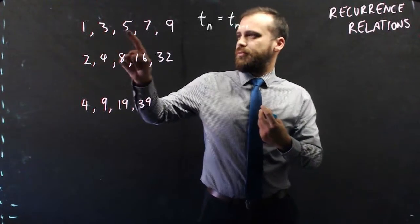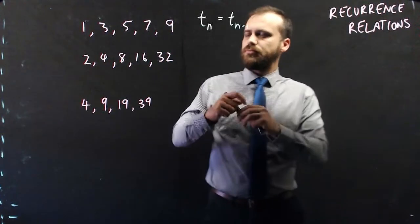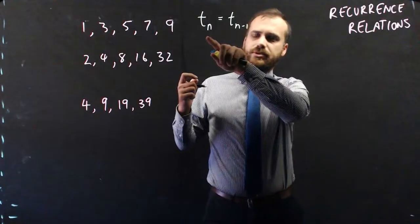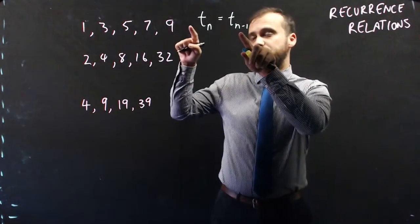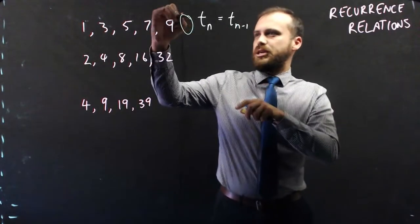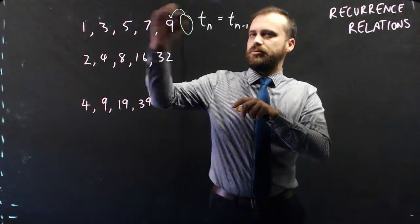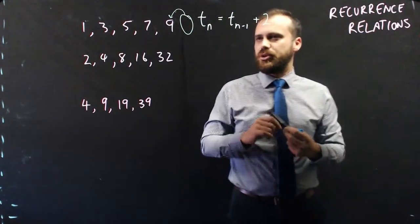1, 3, 5, 7, 9. They're going up in 2s, right? So tn, the next term, is going to be equal to the previous term, tn-1, plus 2. All right, so that's how a recurrence relation works.